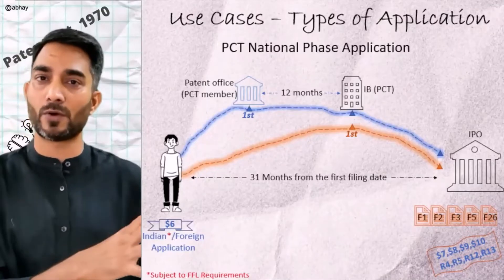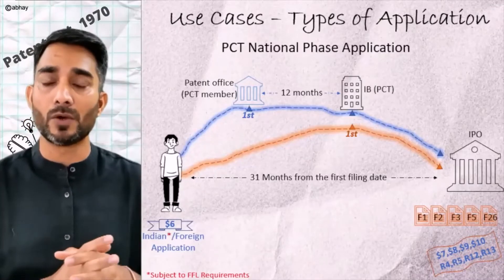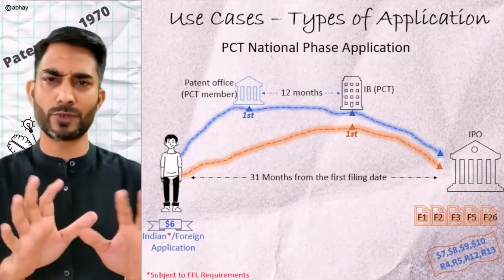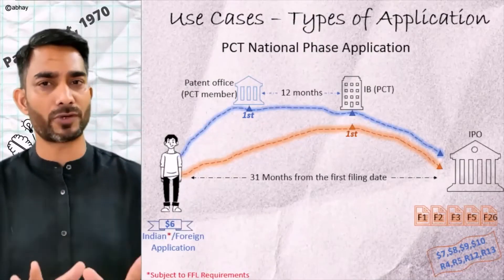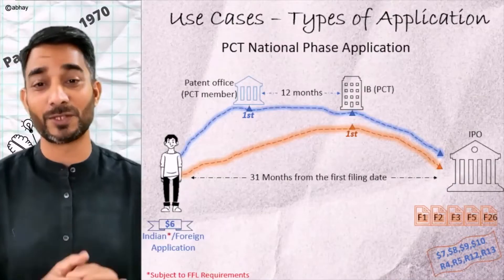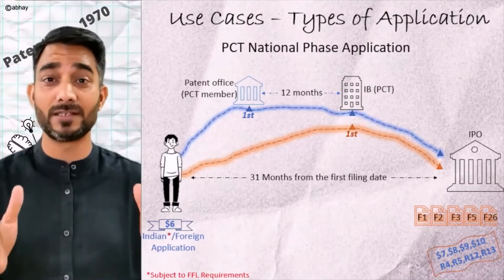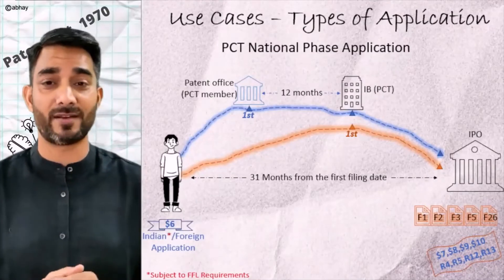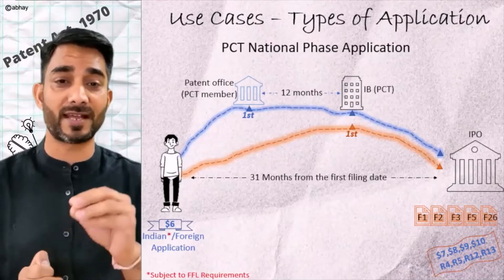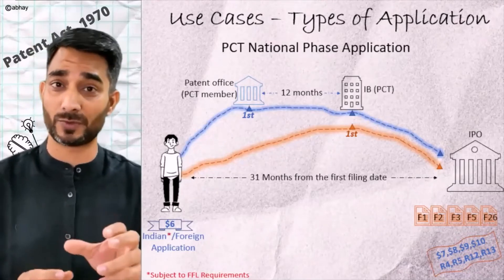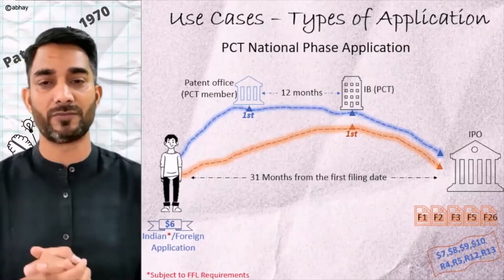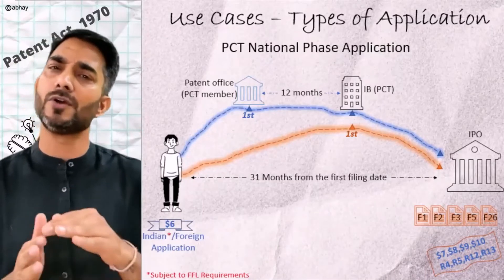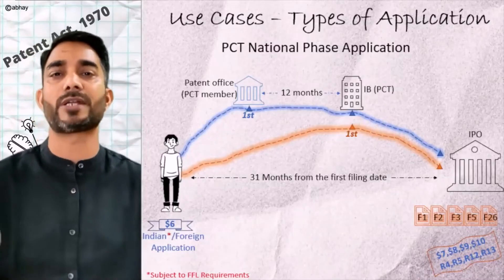You can file an international PCT application either directly with the main office PCT IB Geneva, or it can be filed with other countries acting as the receiving office. For timing, the entire timeline is 31 months from the very first filing. Two routes exist: first, file with a convention country, then file PCT within 12 months, then enter India within 31 months from the first filing. Second route: the first filing itself is with PCT, and from there you enter the Indian Patent Office. Overall time remains 31 months.